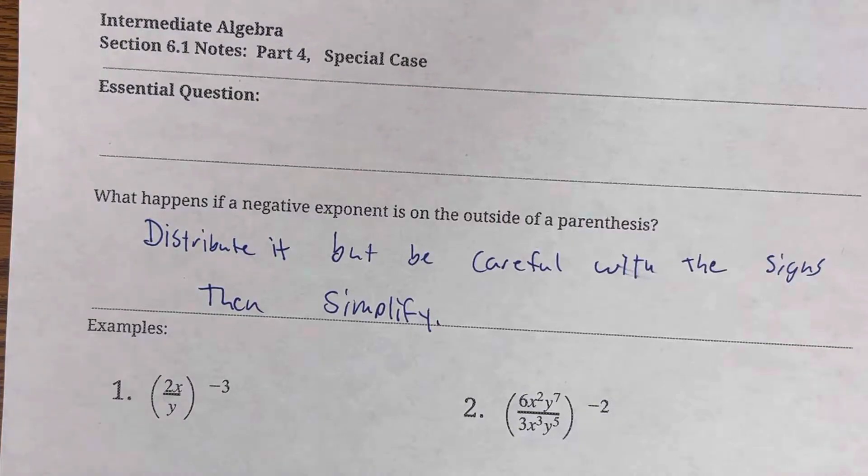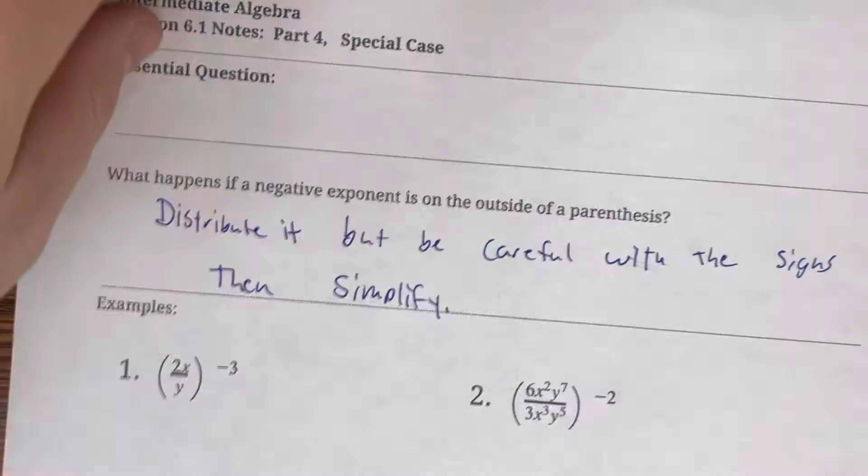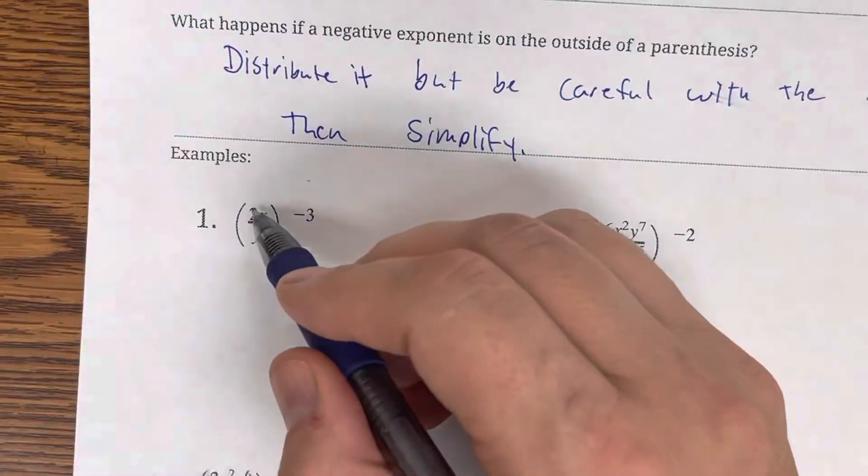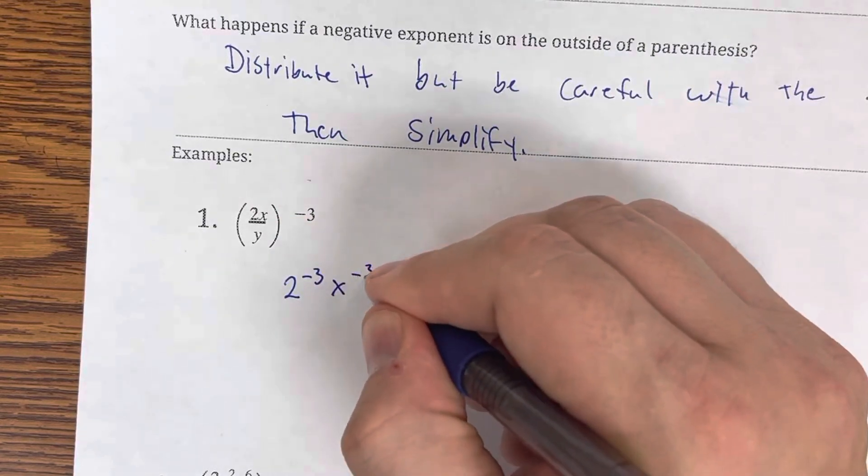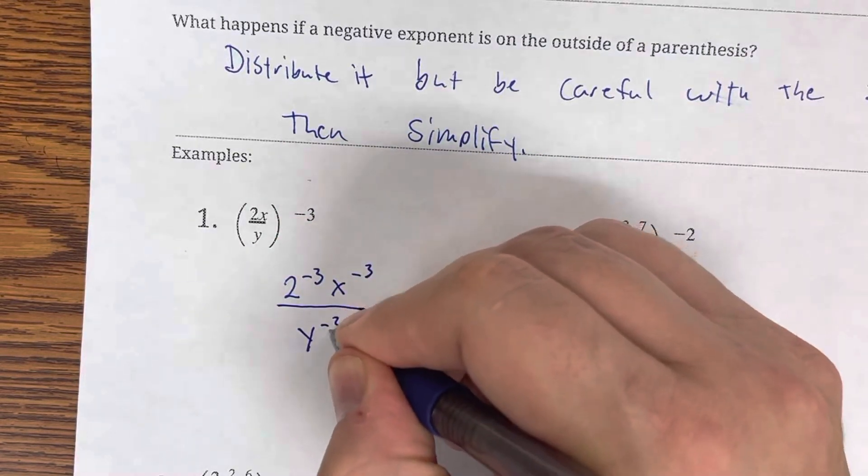All right. So in this process here with our negative exponents, we still have to distribute it to everything inside. So 2 to the negative 3rd, x to the negative 3rd, and over y to the negative 3rd.